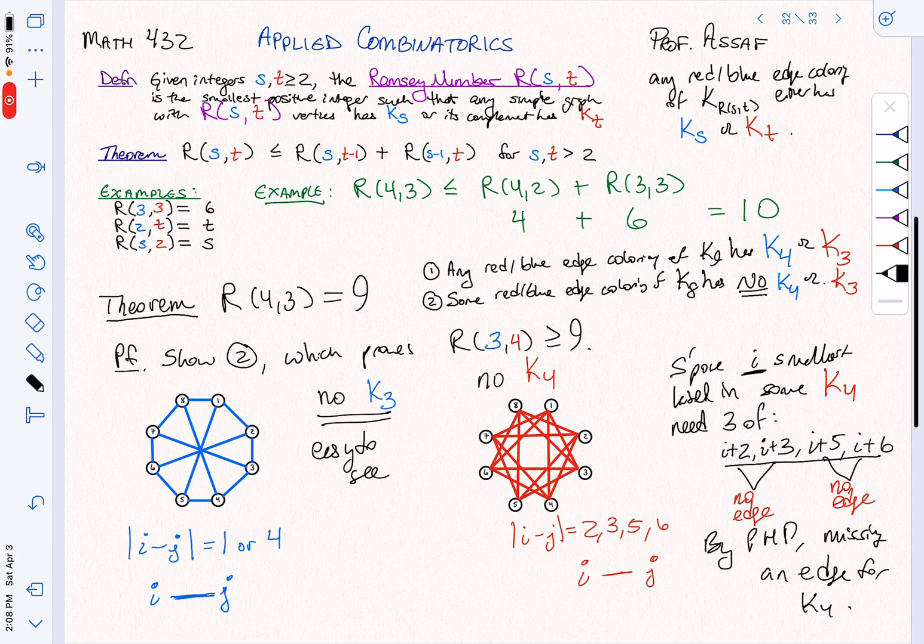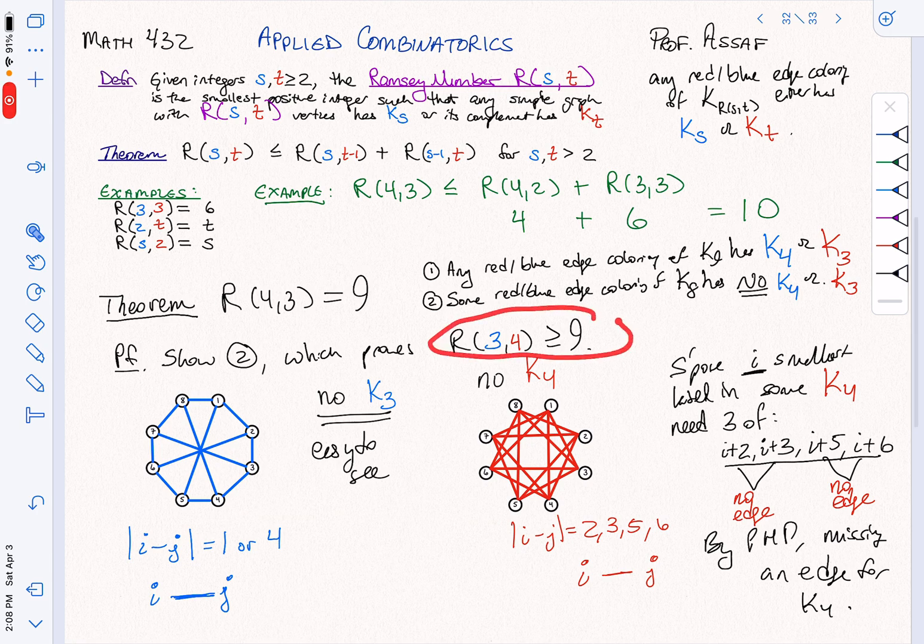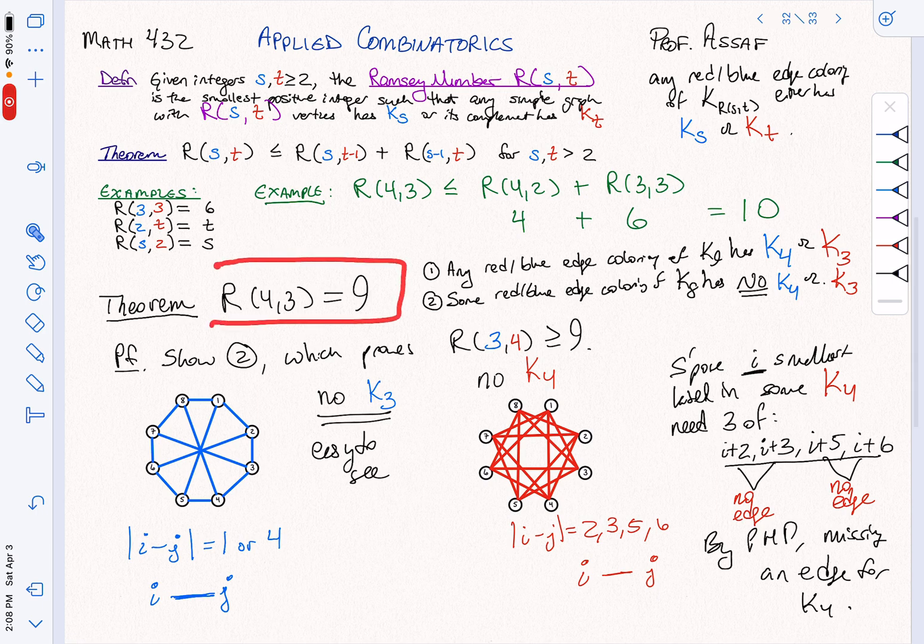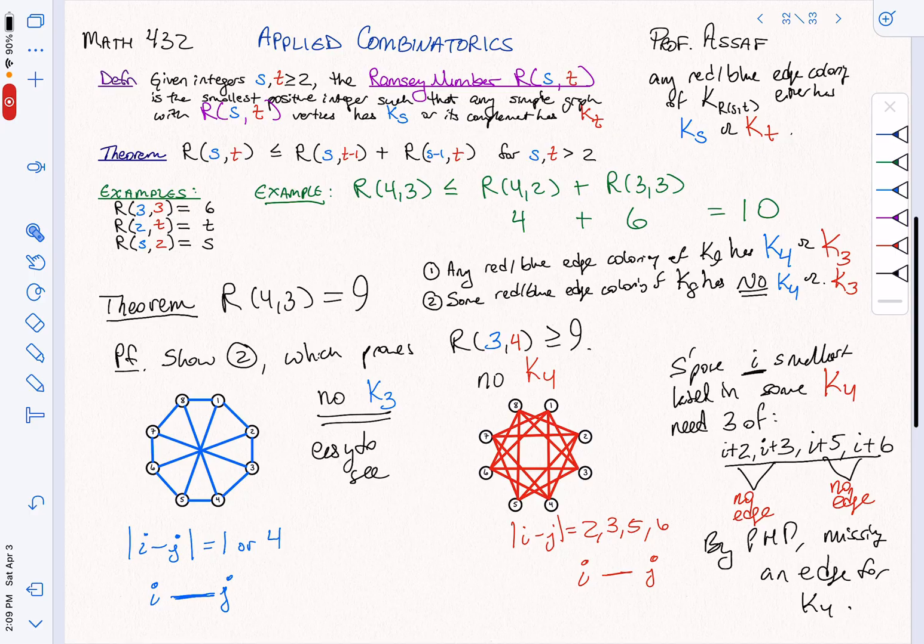So that shows that I definitely don't get K4 in the red part for this very specific coloring of K8, of the complete graph on 8. That proves that the Ramsey number (3,4), and so also the Ramsey number (4,3), is at least 9. In the next video, we'll show it's exactly equal to 9 by mimicking the proof that we did here. If you want, before we tackle that in the videos, you can give it a try yourself, and then we'll go through the details. Take care.